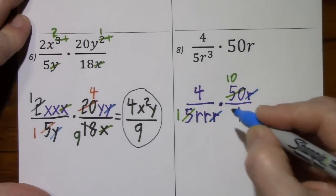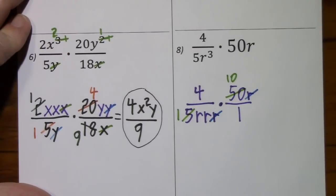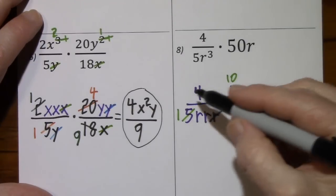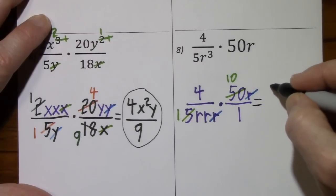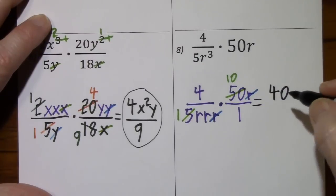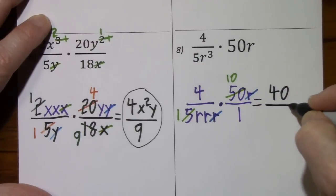r cancels r. And that's all we can do here. So we have four times ten. This gives us 40.